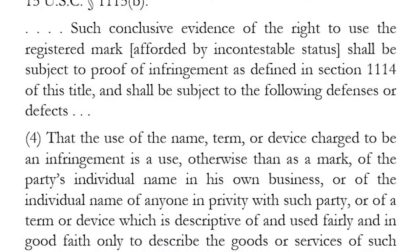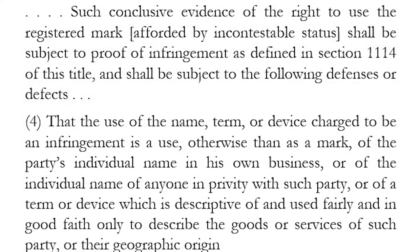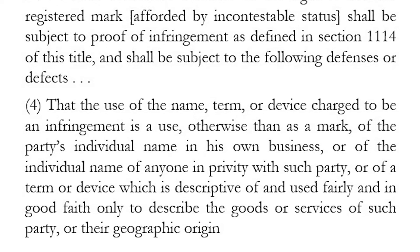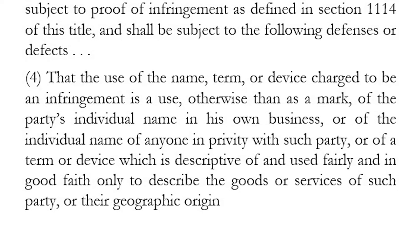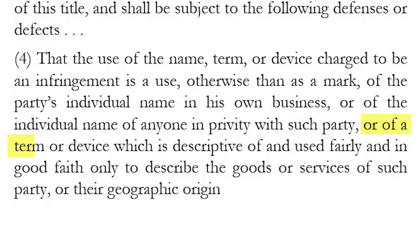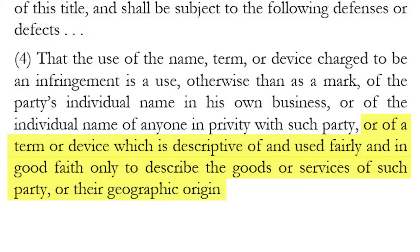Section 33 offers protection if the use of the name, term, or device charged to be an infringement is a use otherwise than as a mark of the party's individual name in their own business, or of the individual name of anyone in privity with such party — or of a term or device which is descriptive of and used fairly and in good faith only to describe the goods or services of such party or their geographic origin. So you see the elements: the use is not as a trademark, is made fairly and in good faith, only to describe one's own goods and services.